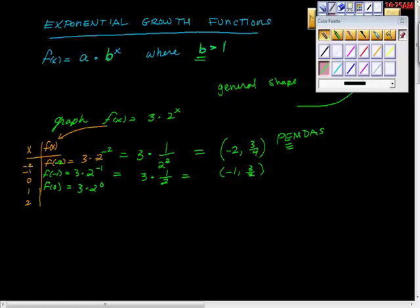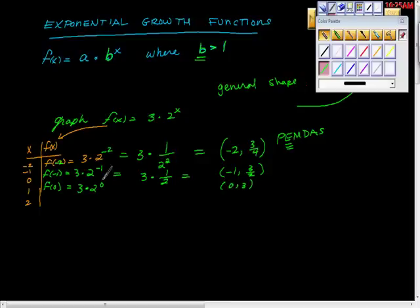Then f(0) is 3 times 2 to the zero power. Any number to the zero power — other than zero itself — is 1. Three times 1 is 3, so we get the point (0, 3). Notice that 6 to the zero power is also 1, not 3 — so multiplying 3 times 2 first wouldn't have worked.